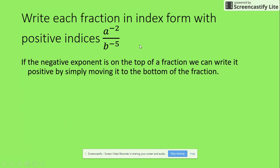If the negative exponent is on the top of the fraction, at the numerator, we can write it positive by simply moving it to the bottom of the fraction. So you take it and put it down here and it becomes positive. As soon as it crosses that line, it becomes positive.